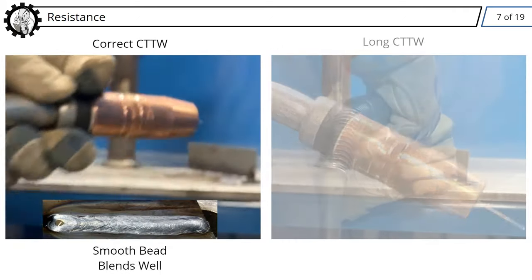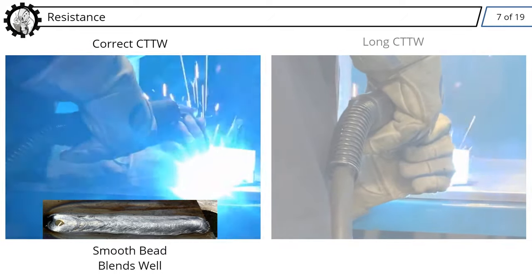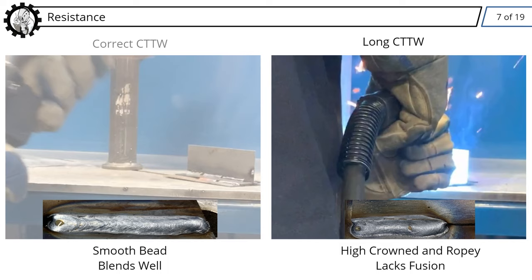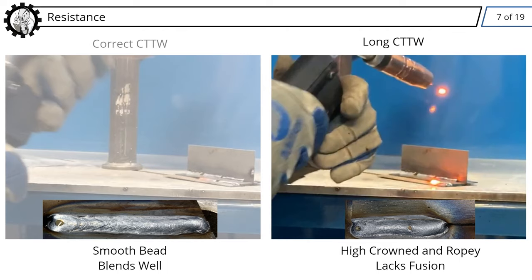In this example, you see an appropriate CTTW distance and the resulting bead is smooth and blends in well with the base material. On the other hand, an exceptionally long CTTW distance results in a bead that is high-crowned and ropey, as if it is lacking good fusion to the base material.